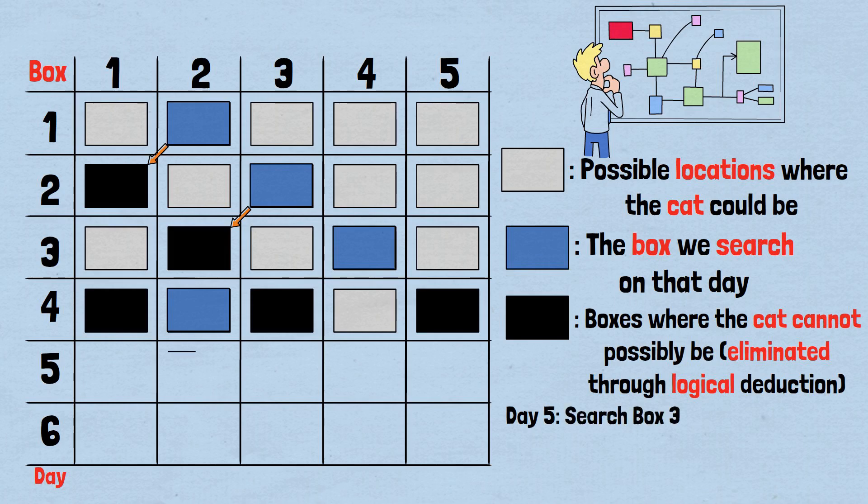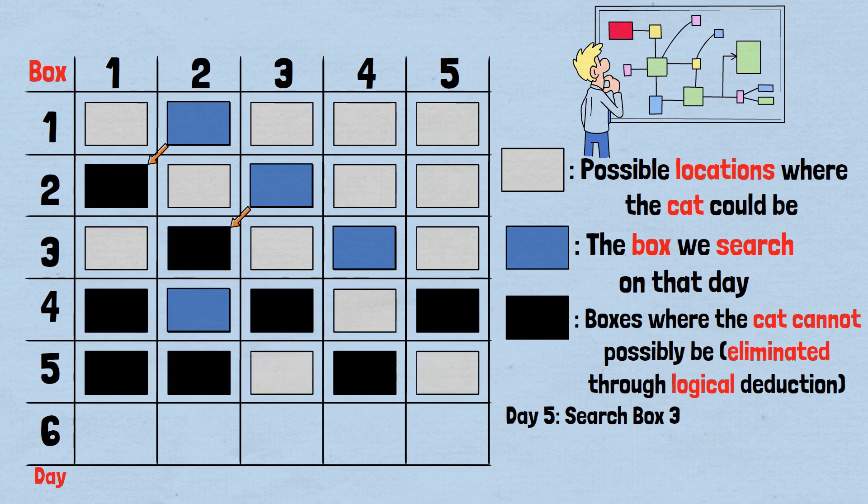Day 5: Search box 3. Certain knowledge: The cat was in box 4 yesterday and must have moved to either box 3 or box 5. Grid status: Only boxes 3 and 5 are gray. Our search: We check box 3, blue. Result: If we find the cat, we win. If not, the cat is definitely in box 5.